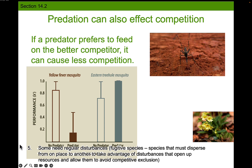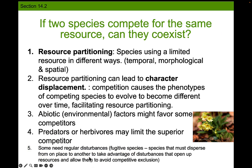Lastly, some species need a regular disturbance — something like a fire — to allow coexistence. For example, this small flower can only exist when there aren't bigger plants shading it out. It would get out-competed by larger plants that block the sunlight. So you tend to only find these plants after a fire has recently come through. If there's a regular disturbance, that might favor coexistence of more than one species.